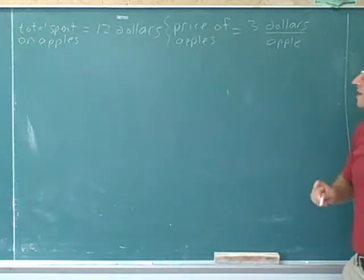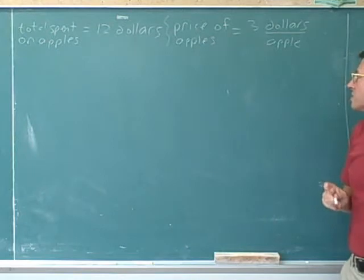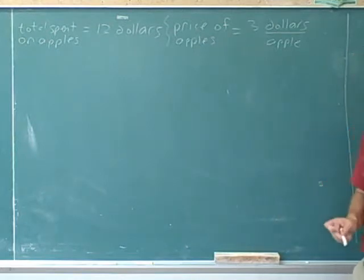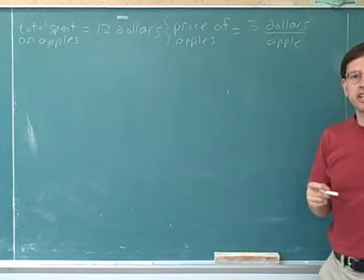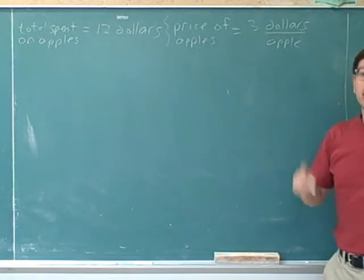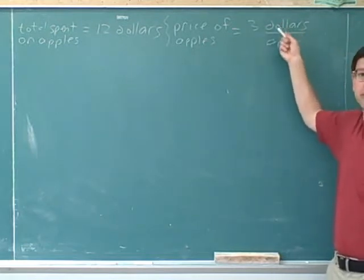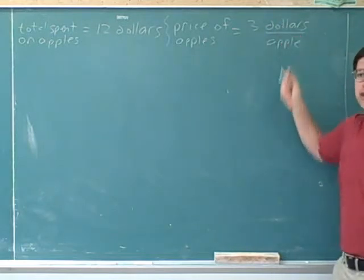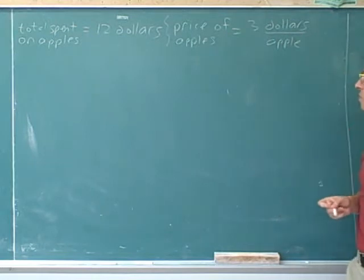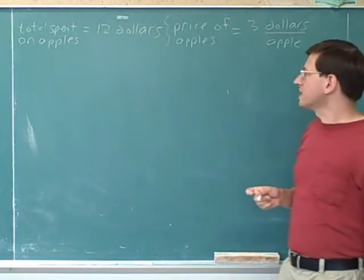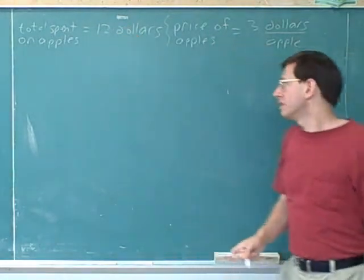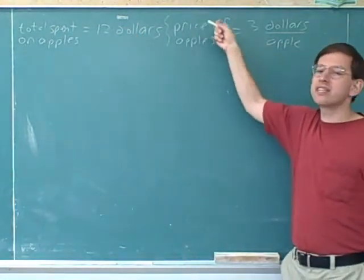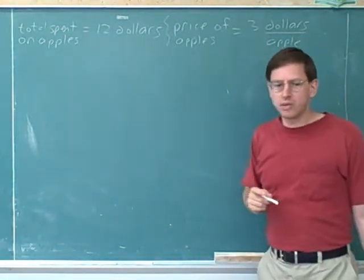So you go to the store and find that the price of apples is three dollars per apple. Now the units are dollars per apple. Is that a ratio unit? Yes, it is a ratio of two units — it's a ratio unit. Two units that form a fraction. So the total amount you spend does not have a ratio unit, but prices have ratio units.